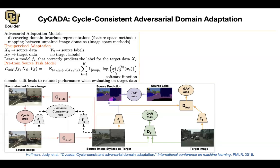We can take a source image and translate it into a fake target image using a generator — this is happening at the pixel level. We borrow ideas from GANs: a discriminator distinguishes between fake target images and real target images, giving us a GAN loss that trains both the discriminator and the generator. We then put a target feature extractor and classifier on top — it takes the fake target images, classifies them, compares to the ground truth, and we write down the task loss to train the classifier.